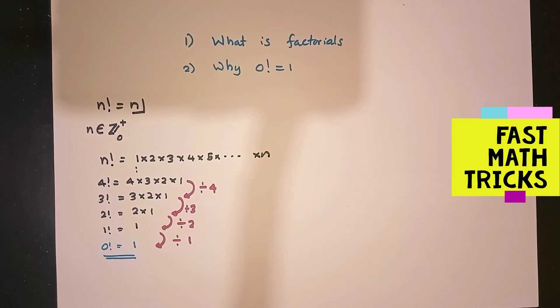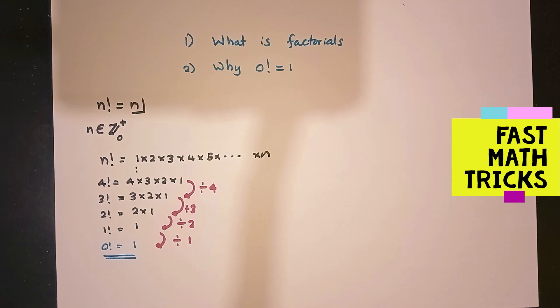Now we know what factorials are, and we know why 0 factorial equals 1. Thank you for watching us — Maddoc.